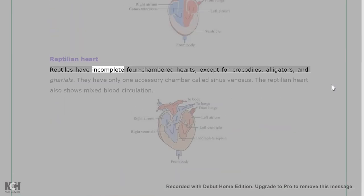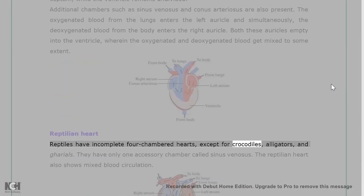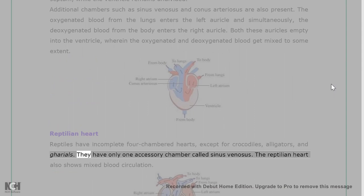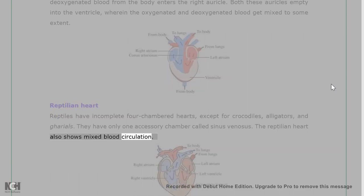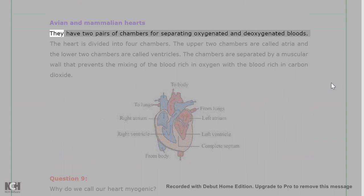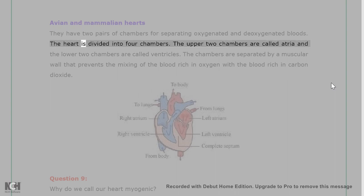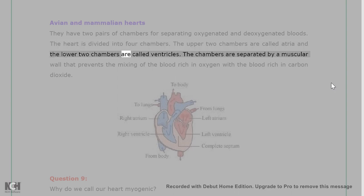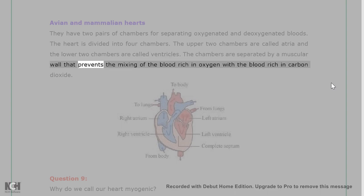Amphibians such as frogs have three-chambered hearts, with two auricles and one ventricle. The auricle is divided into right and left chambers by an interauricular septum, while the ventricle remains undivided. Oxygenated blood from the lungs enters the left auricle, and simultaneously, deoxygenated blood from the body enters the right auricle; both empty into the ventricle, where the bloods mix to some extent. Reptiles have incomplete four-chambered hearts (except crocodiles and alligators), show mixed blood circulation, and have only one accessory chamber called sinus venosus. Avian and mammalian hearts have four chambers fully separating oxygenated and deoxygenated blood, with atria and ventricles separated by a muscular wall preventing mixing.